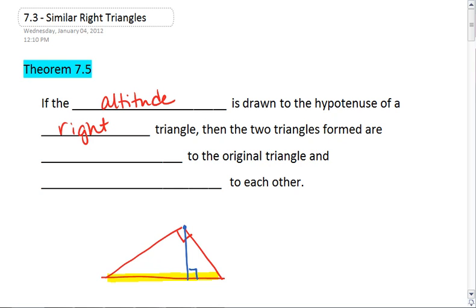Remember, an altitude measures the height of our triangle. It connects a vertex to the other side at a 90 degree angle. Okay, so here we have a right triangle with an altitude that's drawn to the hypotenuse.